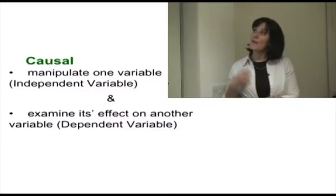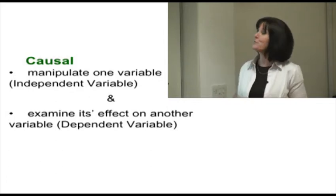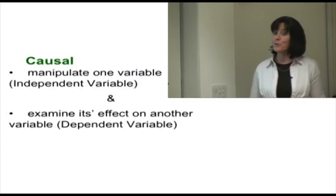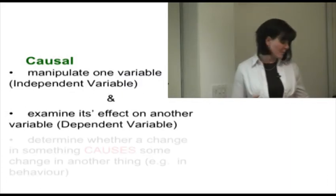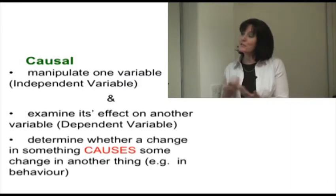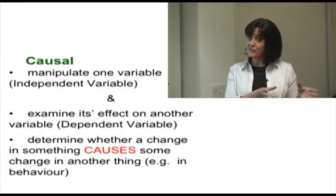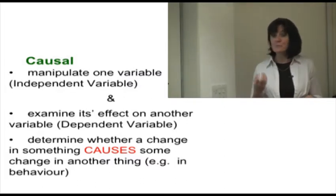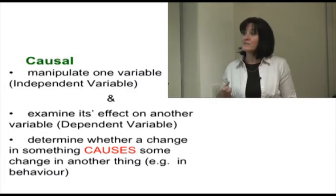An alternative approach is to adopt a causal strategy. This is what we use in experiments. Here we manipulate one variable, which we call the independent variable, and examine its effect on another variable, which we call the dependent variable. What we're trying to do here is to determine whether a change in one variable causes some change in the other. For instance, if we manipulate someone's androgen levels, do we see a change in their aggressive behaviour?